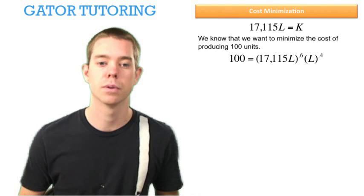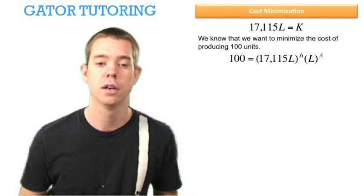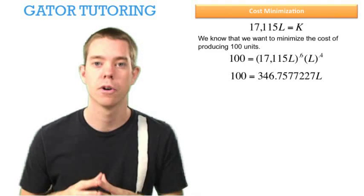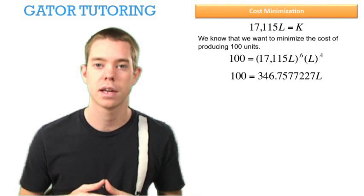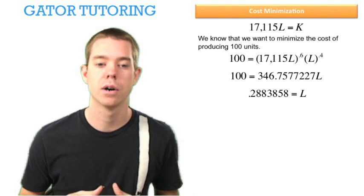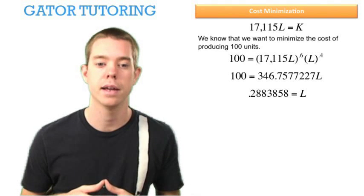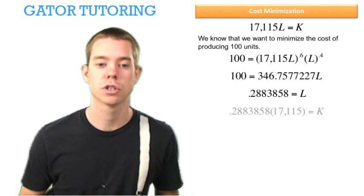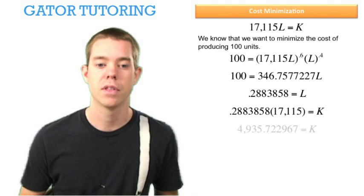We need to simplify by raising 17,115 to the 0.6. L^0.6 times L^0.4 gives us L. Dividing through, we find L = 0.2883858. Solving for K is easy since we already have a function for K. We just plug in L and find K = 4,935.722967.